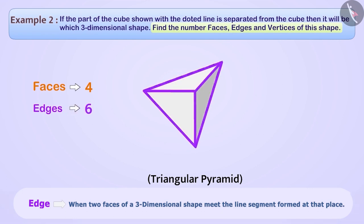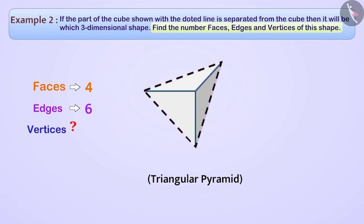Now let's find out how many vertices are in this shape. The point at which three edges meet is called the vertex of that three-dimensional shape. Here you can see that there is a total of four vertices.